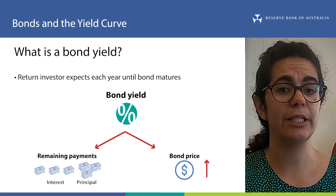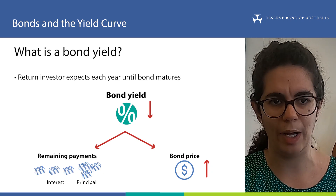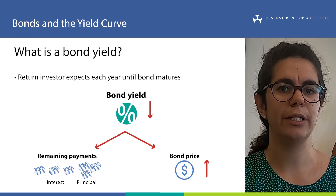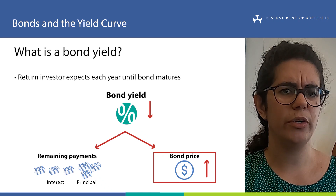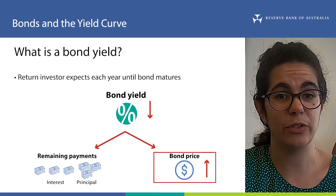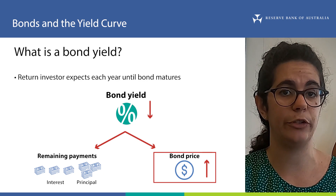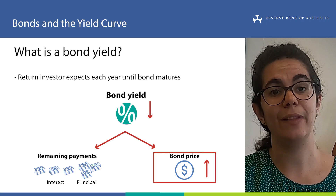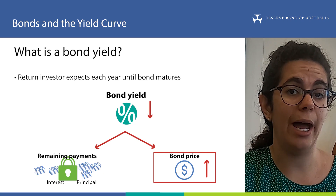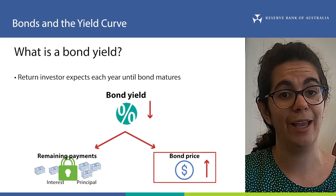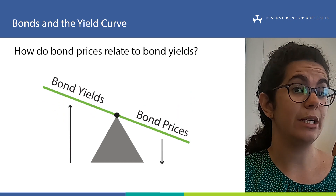If a bond price goes up, its yield will come down, affecting the annualised return investors expect for purchasing bonds in the secondary market. The yield is dependent on the price its owner paid for it, so if the price changes, the yield also changes. Returning to our earlier example: the bond saw its price rise because interest rates in the market fell. With a higher price, the bond becomes more expensive to buy in the secondary market. However, the investor will still only receive the interest and principal originally promised — that doesn't change. Since the bond is more expensive to buy, the return the investor expects will fall, and as this is what the yield measures, it also falls. The opposite occurs if the price falls — the yield would rise. Prices and yields always move in opposite directions, and this is important to remember.